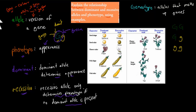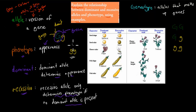The recessive allele only determines the phenotype if no dominant allele is present. So for example if we have two small g's, that's the only example where the actual phenotype — the appearance — will be yellow. Any of the other combinations makes it green.